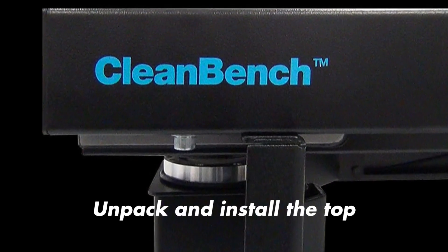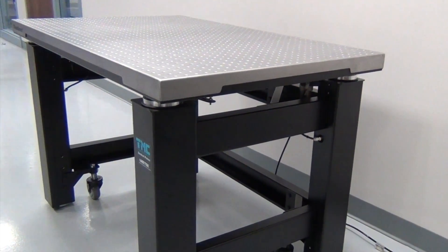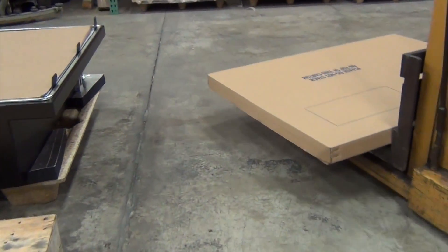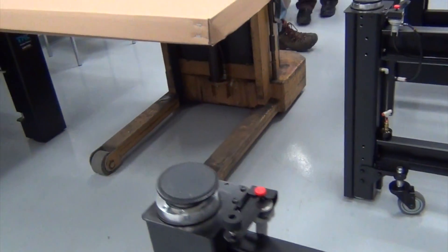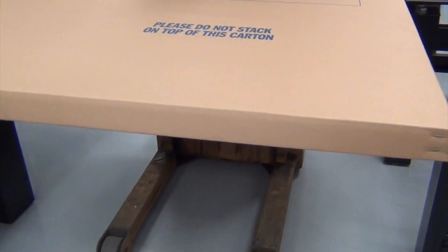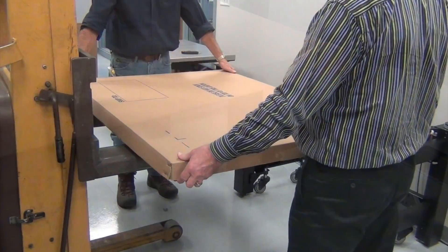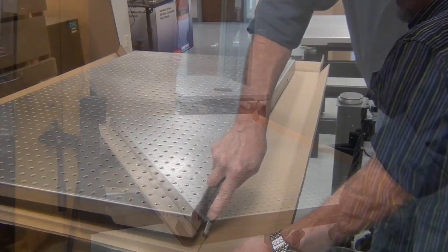Now you are ready to install the top onto the legs. For a clean bench with tapped holes, the top is packaged separately. If you are opening a smooth top clean bench, the top would be located inside the same box as the legs. The top should be lifted properly. Here we are using fork tines to lift the top while still in its packaging.